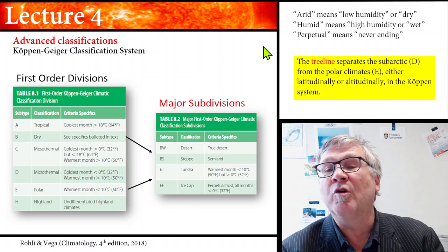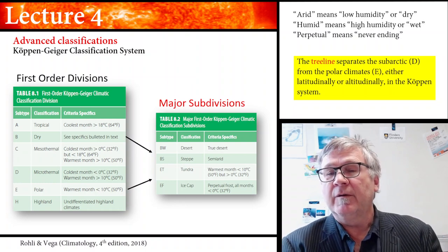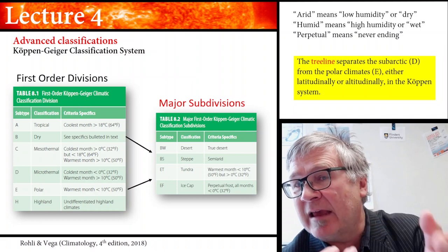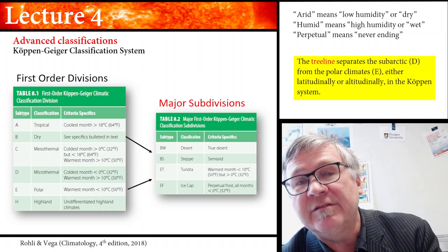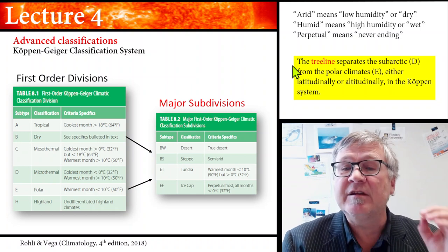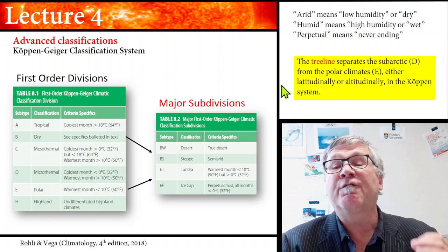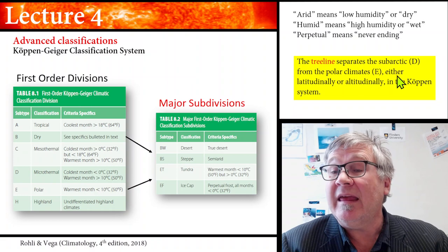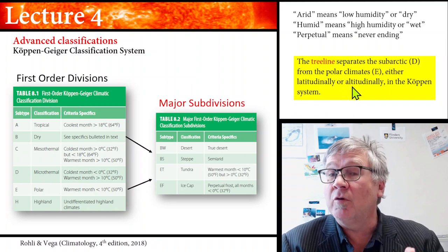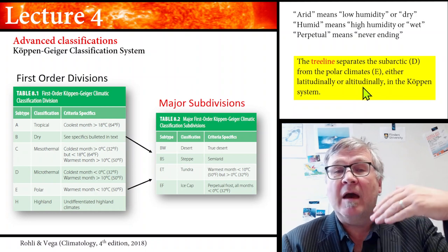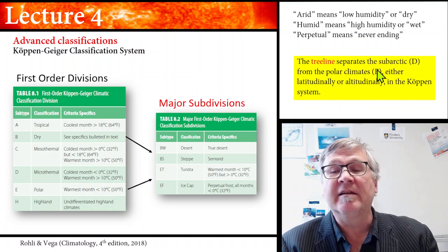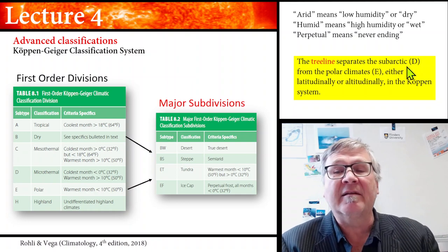You need to know what arid and humid mean — I recommend writing these terms into a little dictionary with explanations. In this classification system, the tree line separates the subarctic from polar climates, both in terms of latitude and altitude. As you go up a mountain it gets colder, and you reach a zone where trees can no longer grow — that's the tree line, separating subarctic from polar climates.